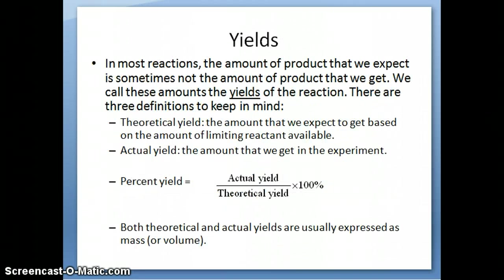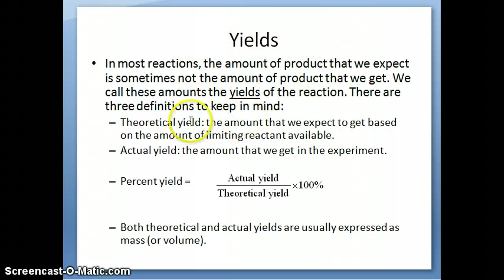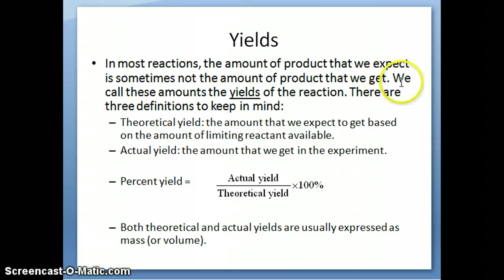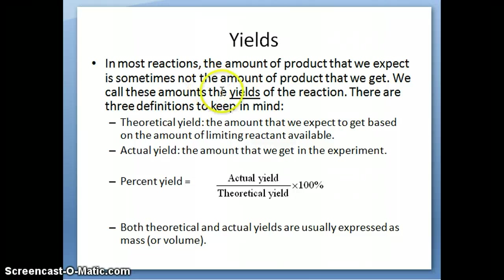A related concept in stoichiometry to limiting reactant is the concept of yield. Yield is basically just the amount of products that we get. The amount of product that you expect to get is sometimes not exactly the amount of product that you'll actually get, because you may have experimental constraints. Regardless, the amount we either expect to get or the amount we actually get in the reaction is what we refer to as the yield of the reaction.